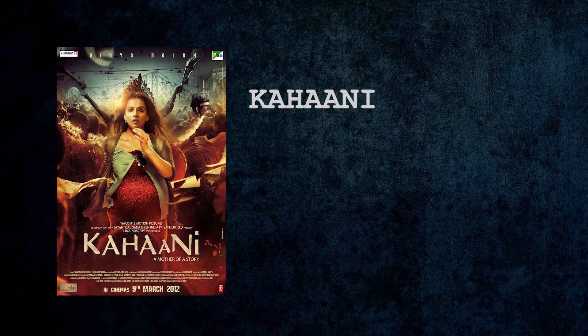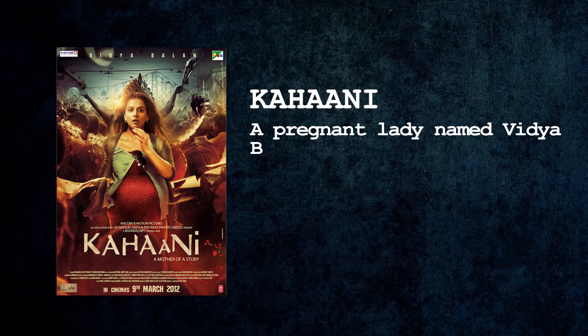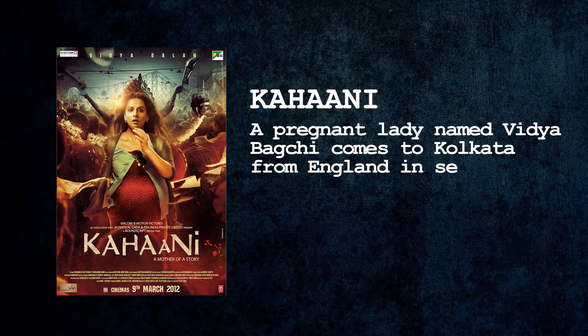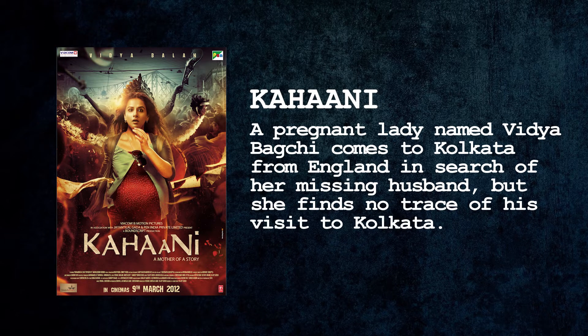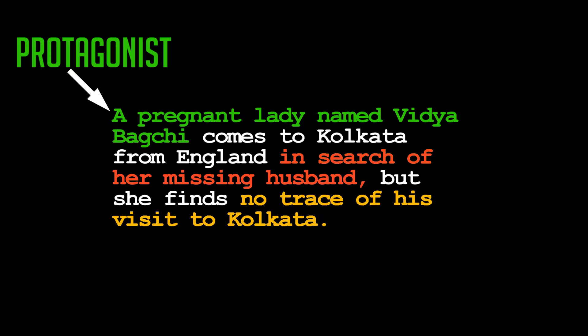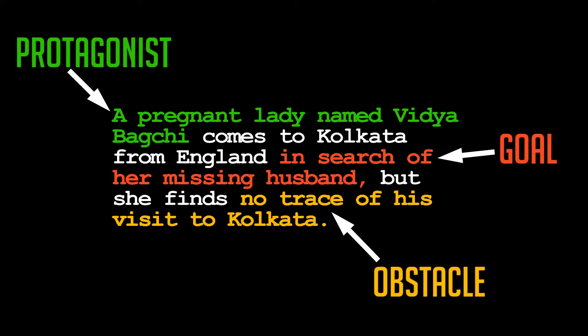Let's look at some examples of loglines from existing movies. A pregnant lady named Vidya Bagchi comes to Kolkata from England in search of her missing husband, but she finds no trace of his visit to Kolkata. The logline is very clear about the protagonist, the goal, and the obstacle. Thus we understand the premise of the film clearly. This logline does not reveal the whole story and gives just the right information to make you want to know more.